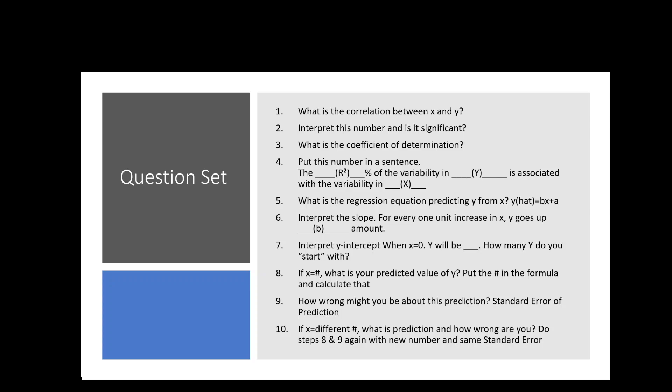The first question I would ask is, is there a correlation between x and y? I'd want to know what that correlation was, and then I'd want to know if you could interpret that number and tell me if it's significant. Then I'd ask you to calculate the coefficient of determination and put that number in that generic sentence. Remember, this generic sentence is the same every time, except we just replace what our y and x variables are. So the key piece is knowing what to put in these parentheses.